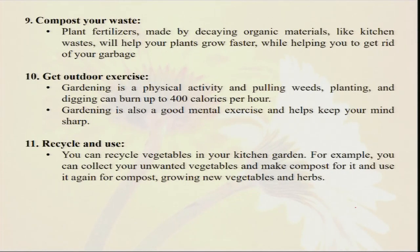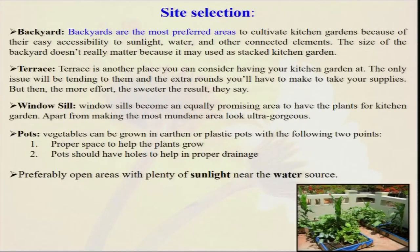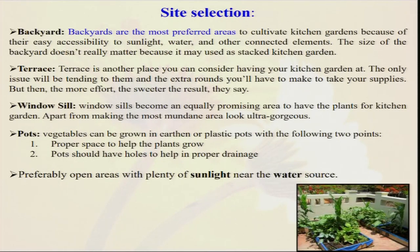Site selection is very important — whenever we go for organic farming, it is of paramount importance which site we have to select. Without proper knowledge of site selection, there is a chance of failure. The site should be in a well-placed location, water should not stagnate, and sunlight should be available throughout the day. The backyard is the most preferred area — kitchen garden means near about your kitchen, so that whenever you need coriander, you can immediately go to the balcony or backyard and take it.